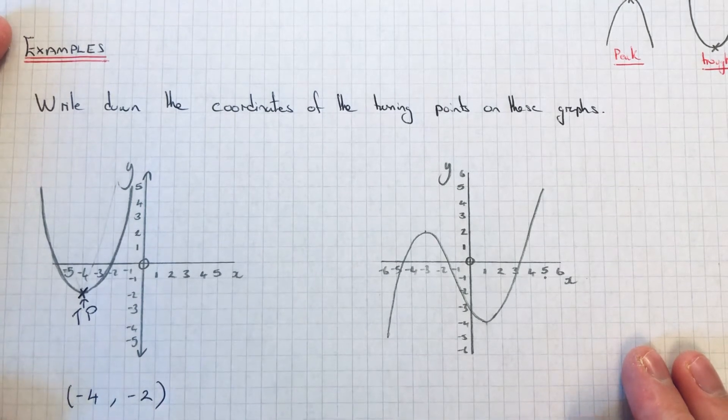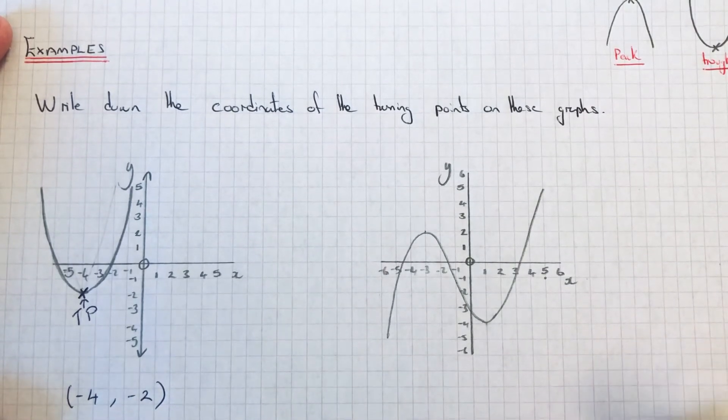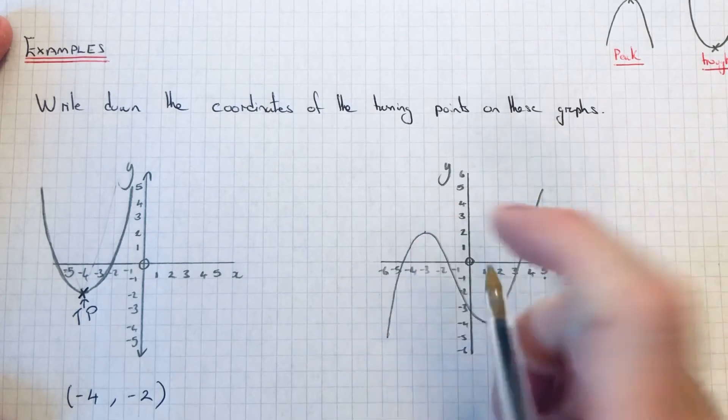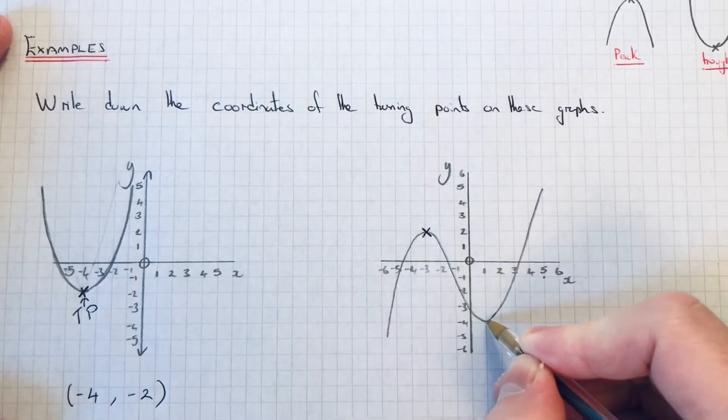So let's have a look at the second example. So this time we have two turning points, so we have a peak here, and a trough here.